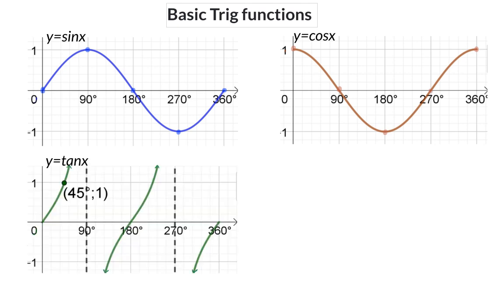Lastly, we have the function y equals tan x. The first two graphs formed continuous wavelengths. The tan graph, however, has separate curves, and in between these curves there are asymptotes. An asymptote is a line that the graph moves closer to but never touches. The tan graph has vertical asymptotes at 90 degrees and again at 270 degrees.